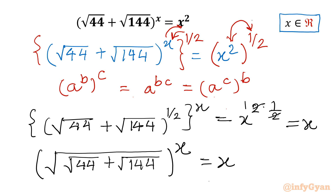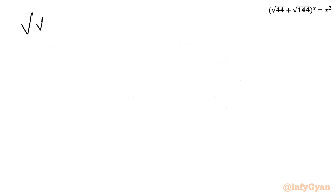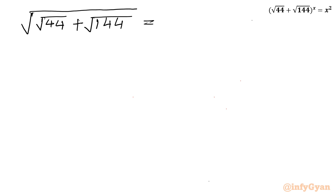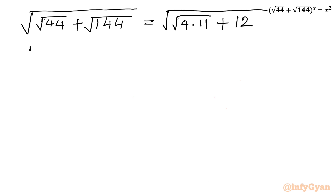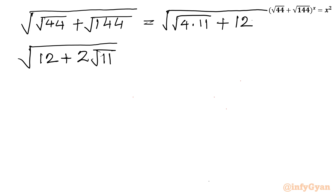This is our simplified exponential equation. Let's solve the LHS base. I will write √44 + √144. First, √144 = 12. And √44 — we can write 44 as 4 times 11, so √44 = 2√11. So LHS base becomes √(2√11 + 12). Now I will split 12 as 11 + 1 + 2√11.